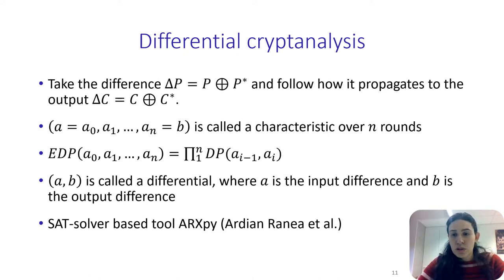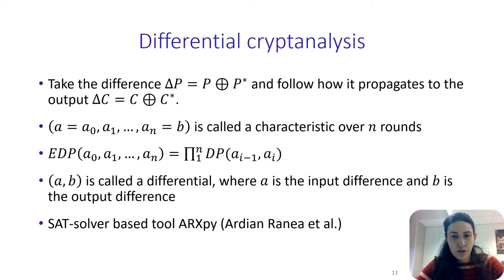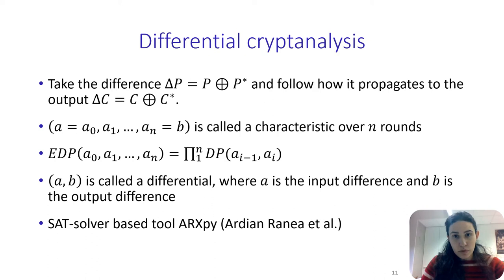Generally, computing this probability is a very difficult task since it is the sum of the probabilities of all possible characteristics with the same input and output mask. Therefore, what is done in practice is to bound this probability with the probability of the optimal characteristic. For our experiments, we use the SAT solver-based tool ARXPy to search for optimal characteristics over the CIMEC S-box of the permutation in order to compute the differential probability of the S-box.